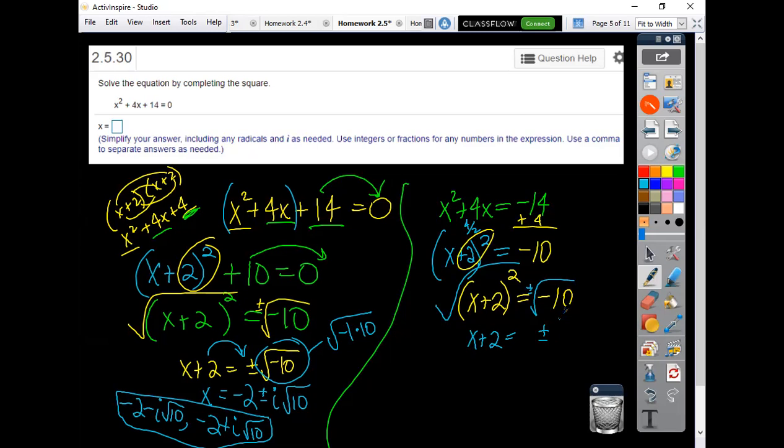Remember, square root of the negative, that's like a square root of negative 1 times 10. Some people will even break it down to show it like this, so that you see that i times the square root of 10 there. And then last but not least, subtract that 2 over right there. And we've got the same two solutions.